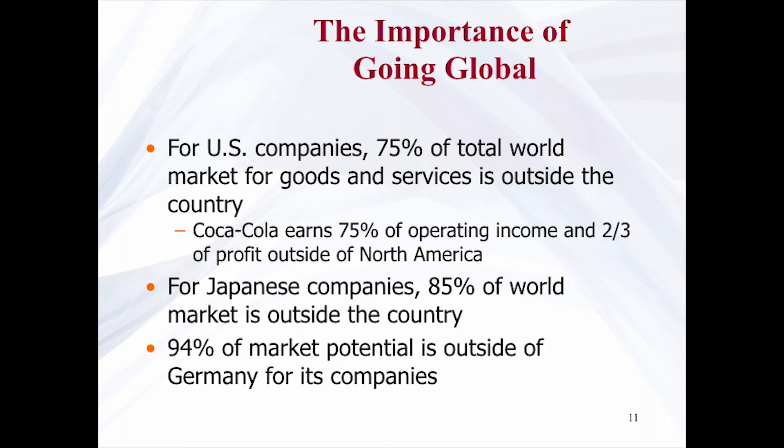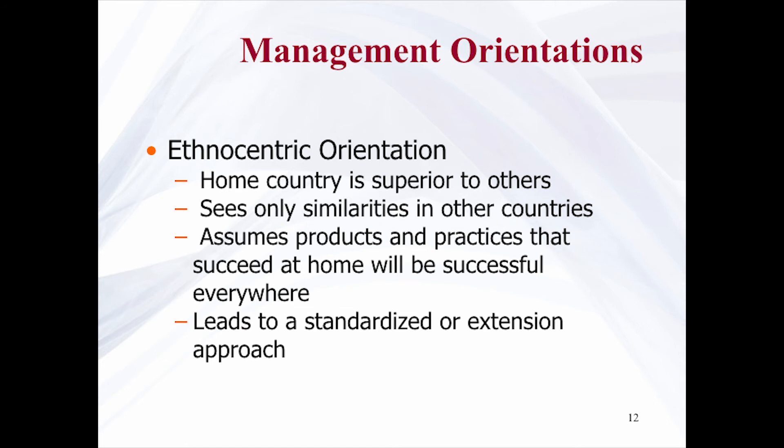For US companies, 75% of the total world market for goods and services is outside the country. Coca-Cola, for instance, earns 75% of operating income and two-thirds of profit outside of North America. For Japanese companies, 85% of the world market is outside their country. 94% of market potential is outside of Germany for its companies.